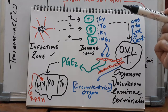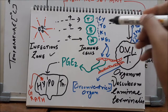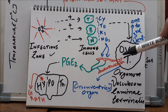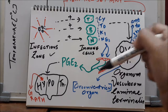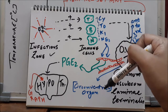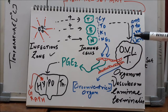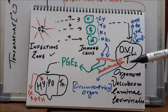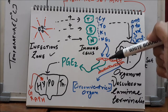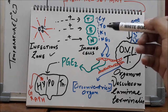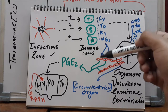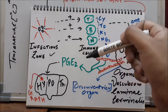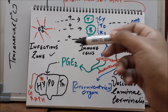The cytokines act on the endothelium of the OVLT — the organum vasculosum of the lamina terminalis — which is a circumventricular organ present anterior to the third ventricle in the lamina terminalis. The cytokines stimulate the endothelial cells of the OVLT to release PGE2, that is Prostaglandin E2.